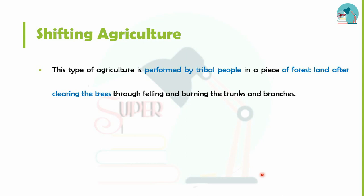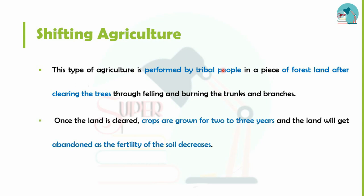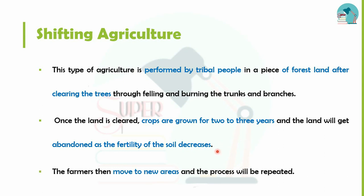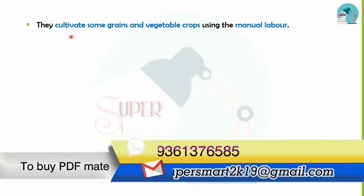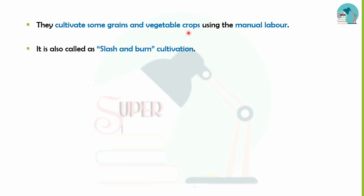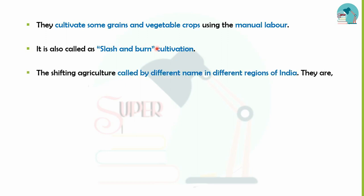Next is shifting agriculture. Shifting agriculture is practiced by tribal peoples. They go to forest land, clear the trees, and cultivate crops on that land for about 3 years. Once soil fertility declines, they move to another area. This is shifting cultivation. Some grains or vegetable crops are grown using manual labor. It is also called slash and burn cultivation.